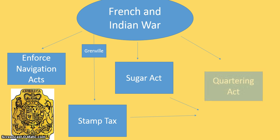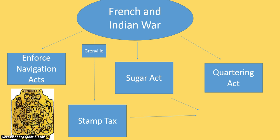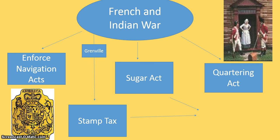The next tax will be the Sugar Act, which replaces the ineffective Molasses Act — about a three-pence tax on a gallon of molasses or sugar, also to raise revenue. Then we get the Quartering Act. Now that Britain realizes they need to leave more troops in the Americas, the colonies are going to have to pay to quarter them — build barracks and feed them. This upset the colonists because that's a pretty big expense, and it hurt farmers who were asked to supply food and maybe even shelter for these troops.